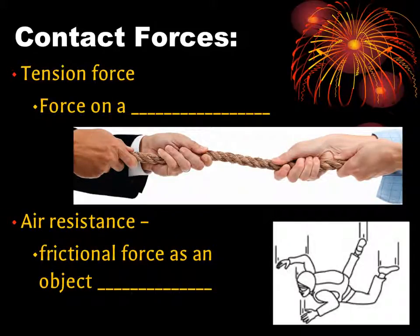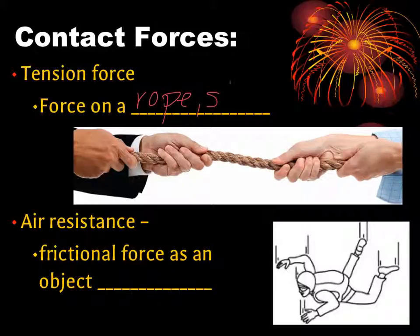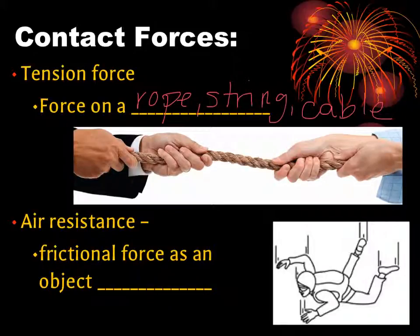Another contact force here is the tension force, a force that we see either on a rope, a string, or a cable. As we can see here, this rope is pulled nice and tight from both directions. That increases the tension force. We could see it with a tightrope walker or with a hammock - any of those examples would be the rope or string pulled tightly.